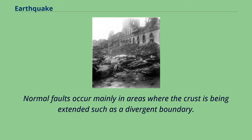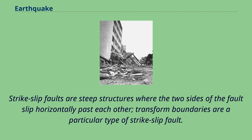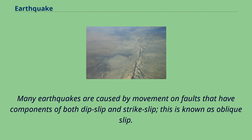Normal faults occur mainly in areas where the crust is being extended, such as a divergent boundary. Reverse faults occur in areas where the crust is being shortened, such as at a convergent boundary. Strike-slip faults are steep structures where the two sides of the fault slip horizontally past each other; transform boundaries are a particular type of strike-slip fault. Many earthquakes are caused by movement on faults that have components of both dip-slip and strike-slip, known as oblique-slip.